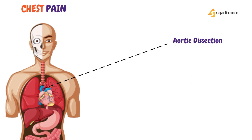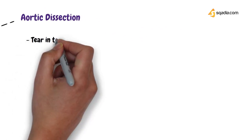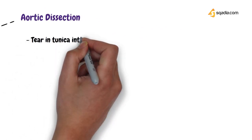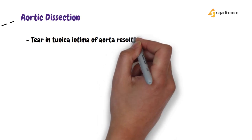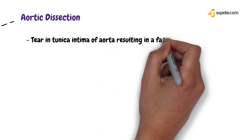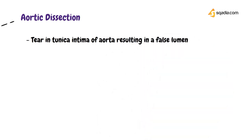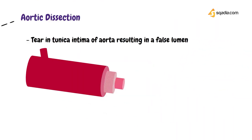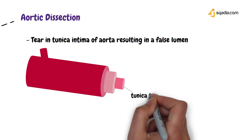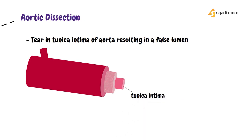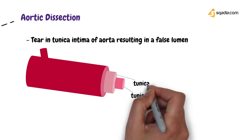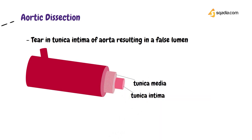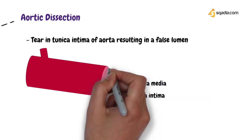In this condition there is a tear in the tunica intima of the aorta forming a false lumen. The tunica intima is the innermost lining of the wall of the aorta, and the tear causes blood to seep between the tunica intima and tunica media.